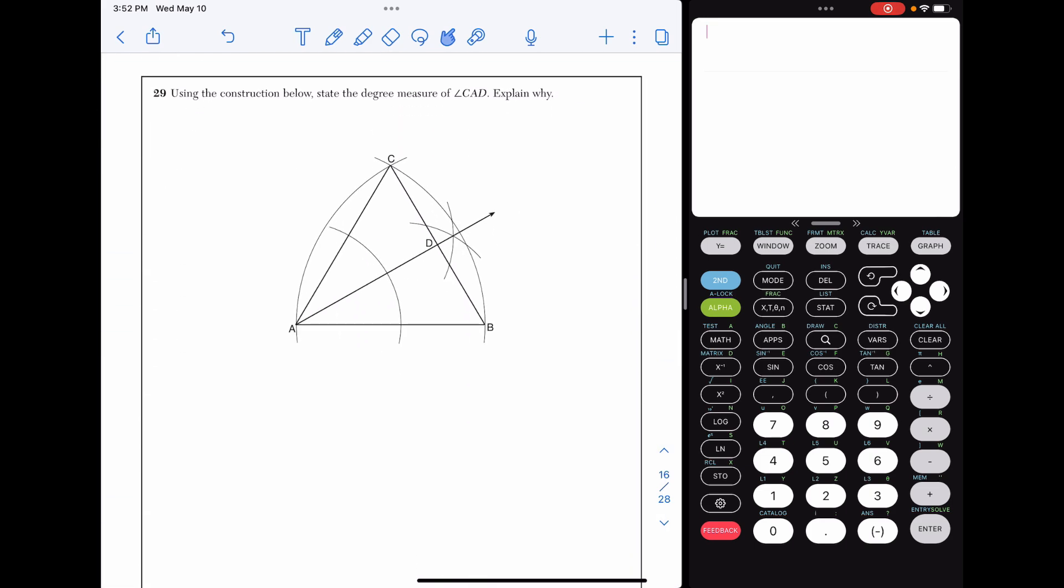Number 29. Using the construction below, state the degree measure of angle CAD and explain why. This is kind of a unique question as well because in this problem, we're not asked to do the construction. It's done for us. And we just have to figure out how big the angle measure is. So it's asking for the angle or the degree measure of angle CAD. So we have to look closely here to kind of see what can we tell about this picture. And it looks to me that this is going to be an equilateral triangle. I can tell that by the intersection of these arcs here that that makes those sides congruent and that basically these arcs were used for both A and B, like go through A and B. So if you have an equilateral triangle, all of the angles are 60.